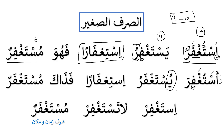Summary of today: fi'l al-amr is istaghfir; fi'l al-nahi is la tastaghfir. For ism al-maf'ul as dharf al-zaman wa al-makan: in derived forms there is no specific pattern, so ism al-maf'ul can be used as dharf zaman or dharf makan if needed, like mudkhal and mukharij. Otherwise it functions as maf'ul bihi or ism al-maf'ul.